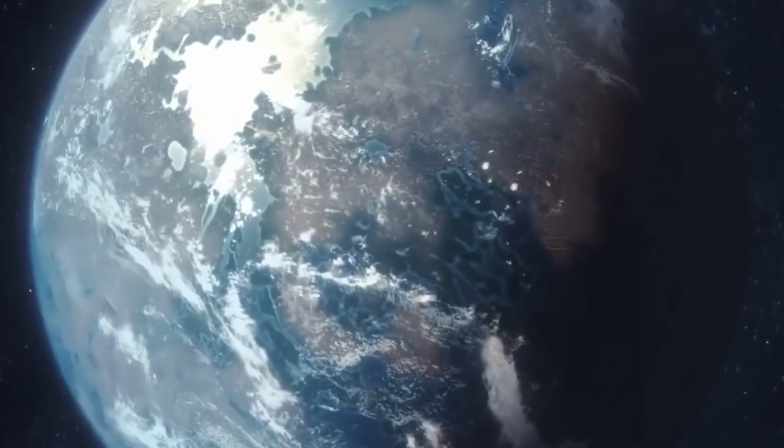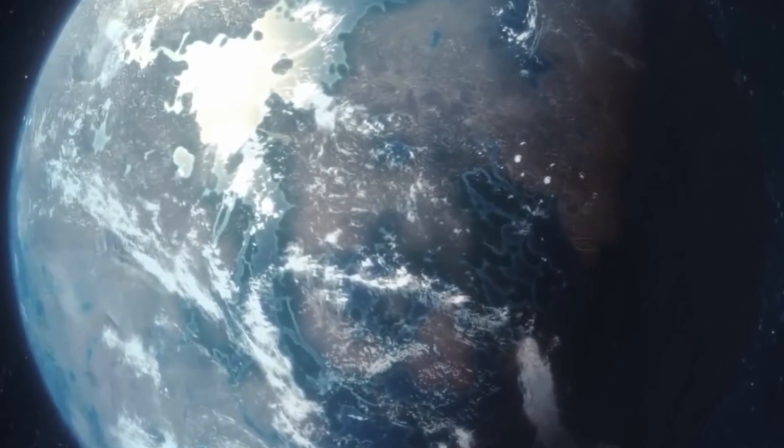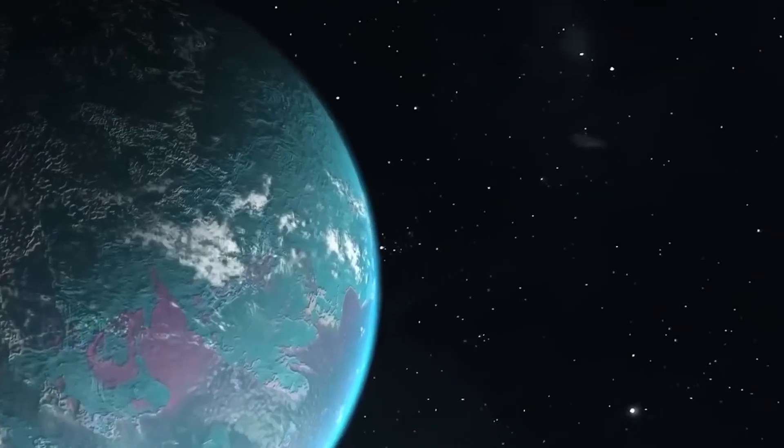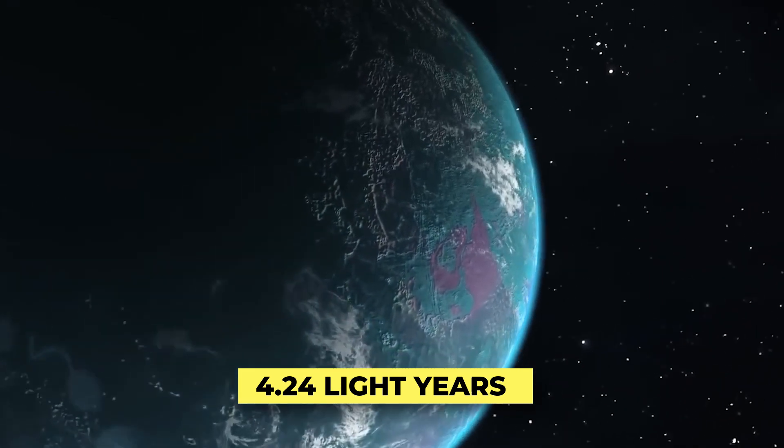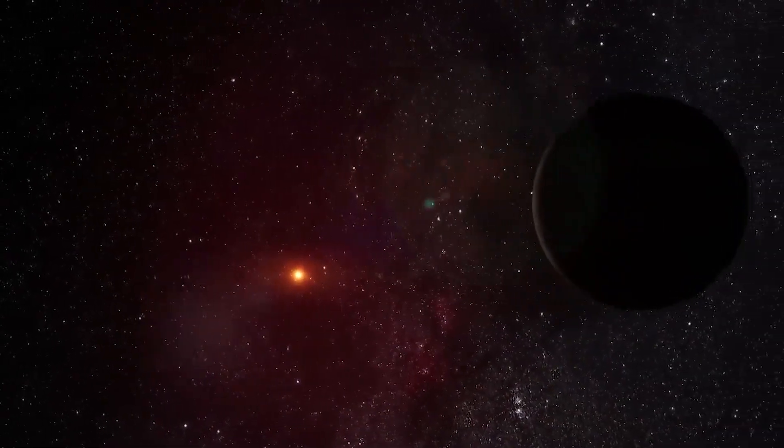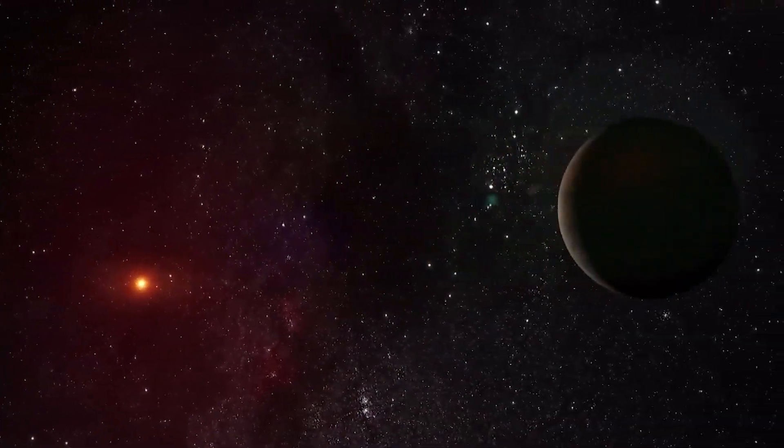Proxima b is one of the exoplanets nearest to the Earth. It was discovered in 2016 and is 4.24 light-years away from our planet. Proxima b revolves around a sun called Proxima Centauri, the nearest star to our solar system.